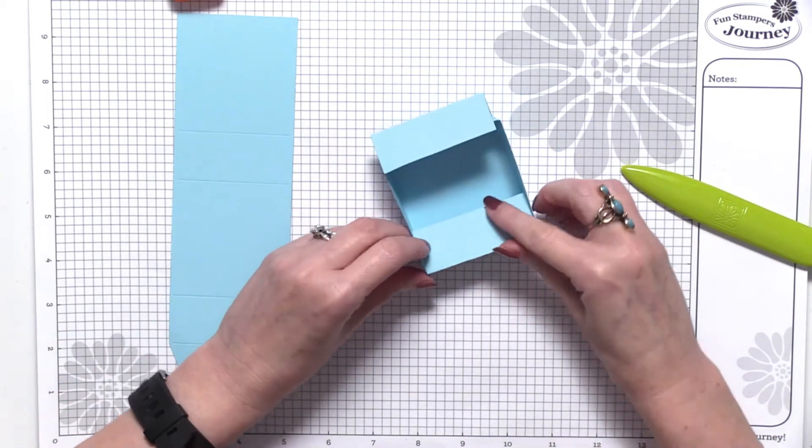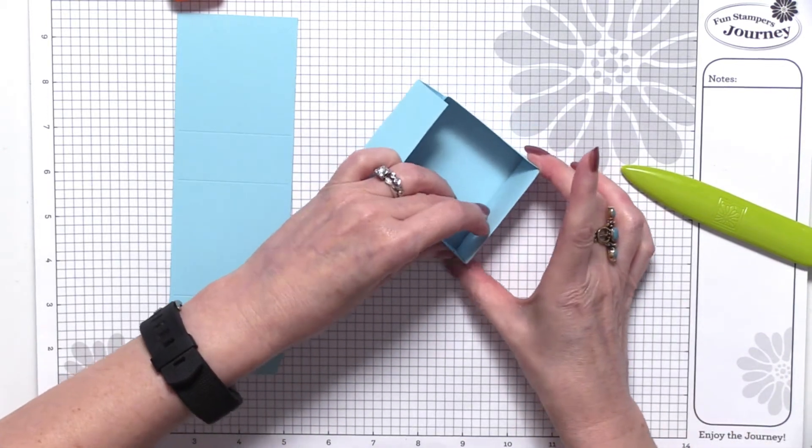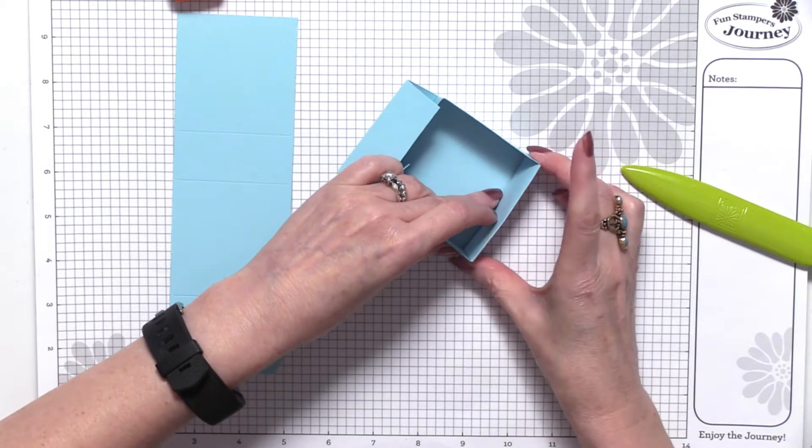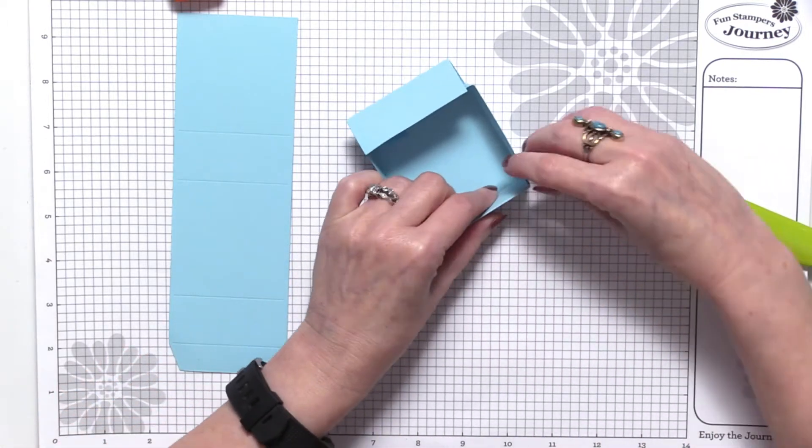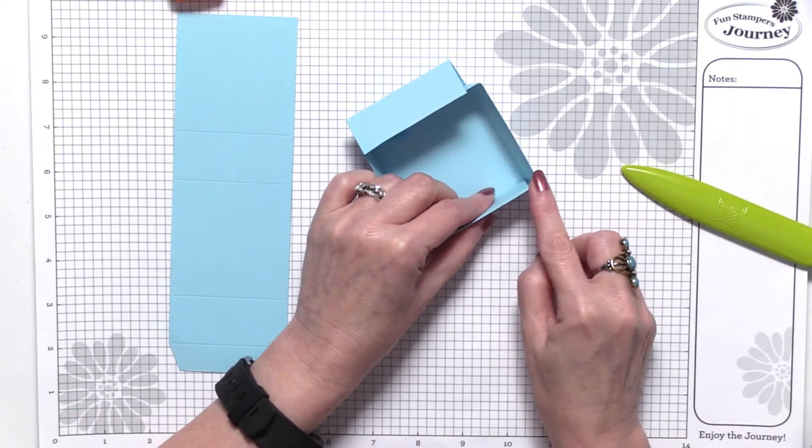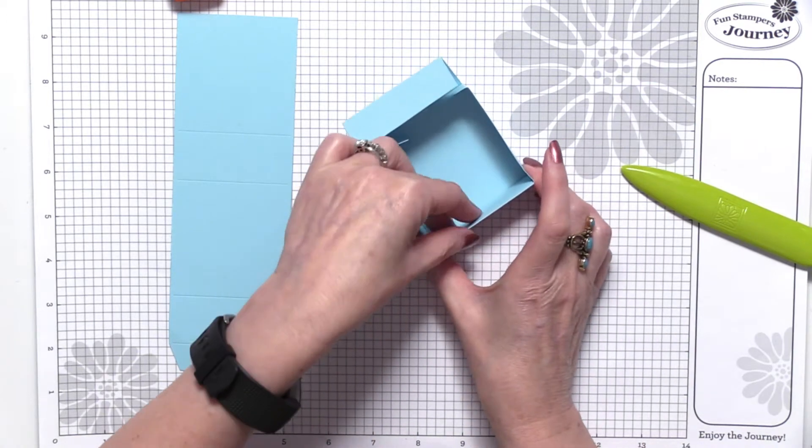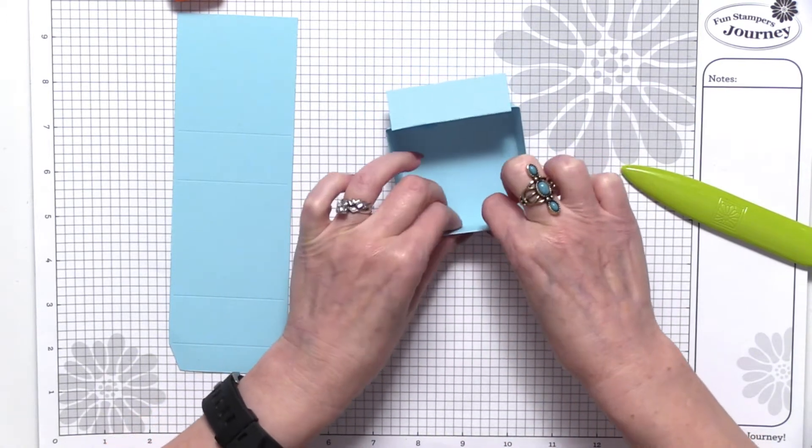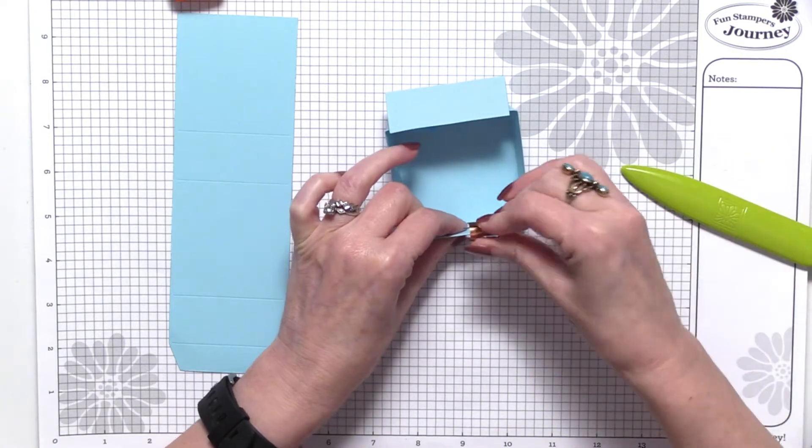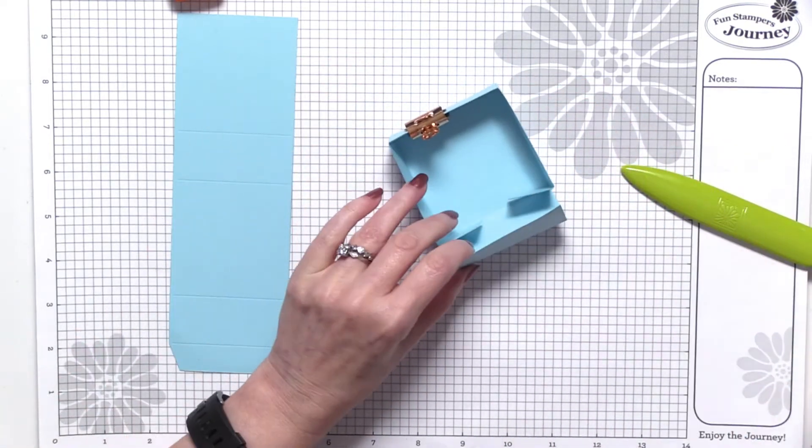Alright, so when you're folding it down, make sure you squeeze with your finger and your thumb because you don't want to accidentally have it pulled out a little bit. You want to make sure you're at a crisp angle, and then I like to clip it, and glue the next.